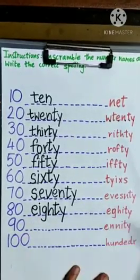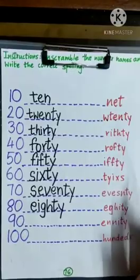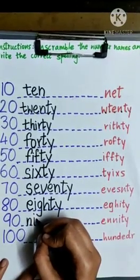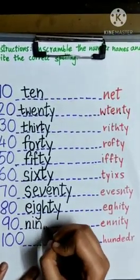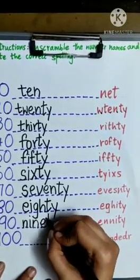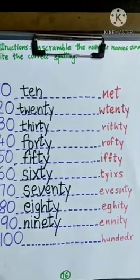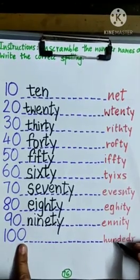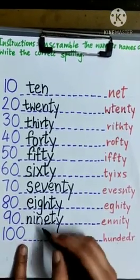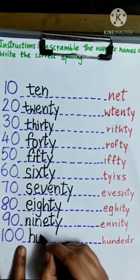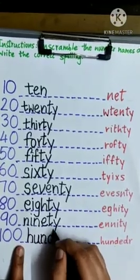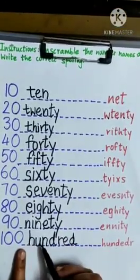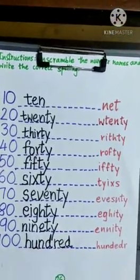Then 90, E-N-N-I-T-Y. Number 100, H-U-N-D-E-D-R. First letter would be H, then U, then N, D, then R, E, D. H-U-N-D-R-E-D, one hundred. Thank you.